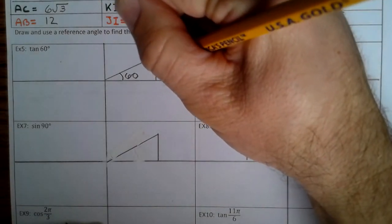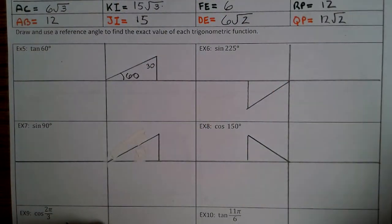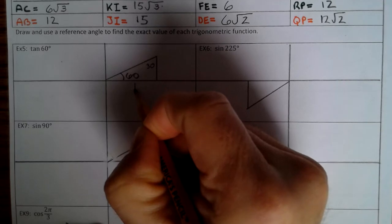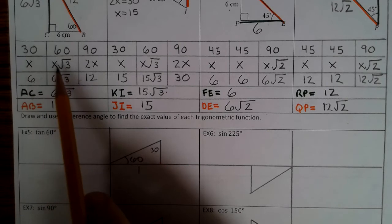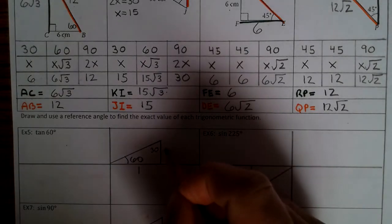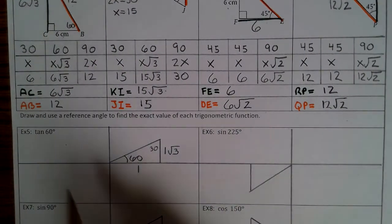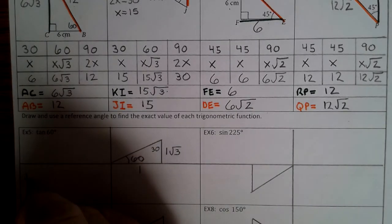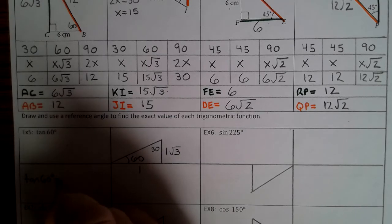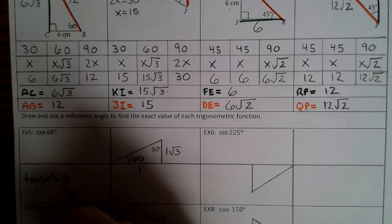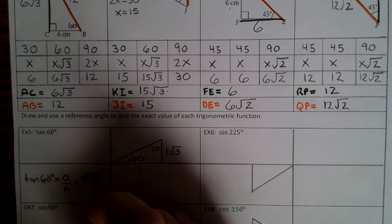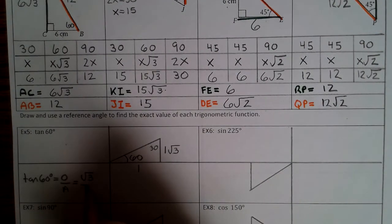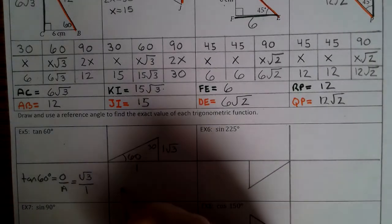From our notes, this length is 1. From our table, 30 is x and 60 is x square root of 3. So if this is 1, then this is 1 square root of 3. Tangent of 60 degrees equals opposite over adjacent. Opposite to 60 degrees is square root of 3, and adjacent is 1, so square root of 3 divided by 1. Tangent of 60 degrees equals square root of 3.